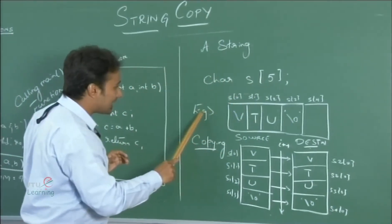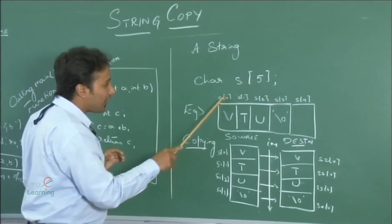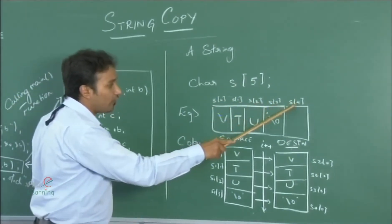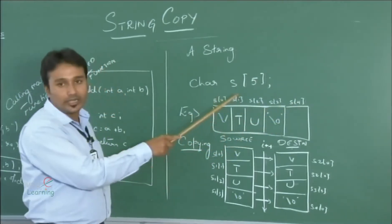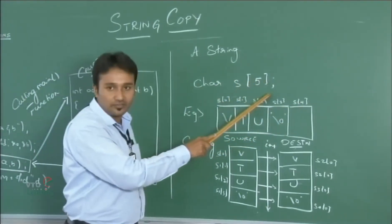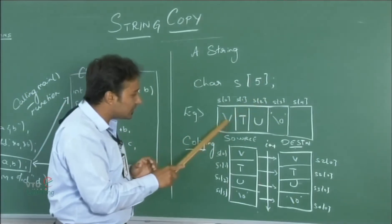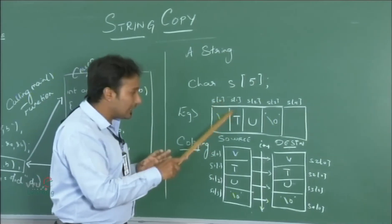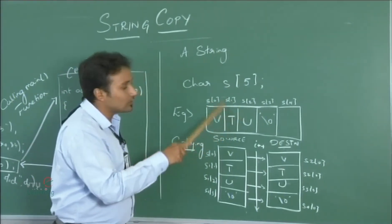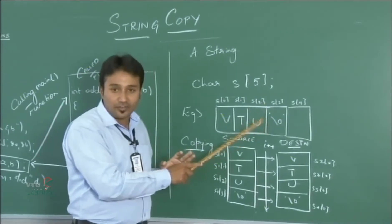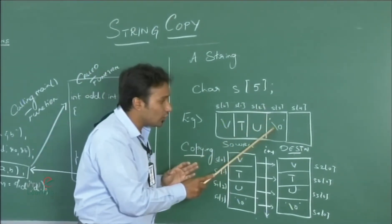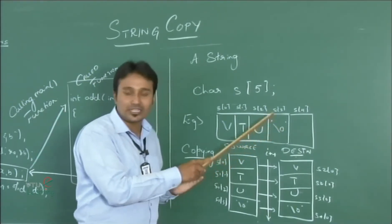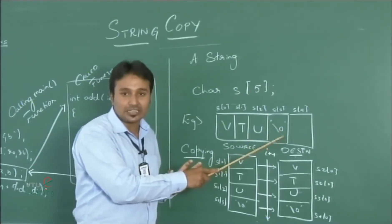Consider s of size 5 — we have s[0], s[1], s[2], s[3], and s[4], giving 5 blocks of memory. These are filled with V, T, and U: V at the first location, T at the next, U after that. Every string is terminated using a null character, represented as '\0' within single quotes.